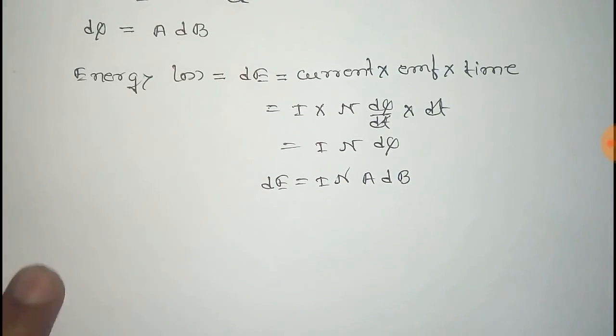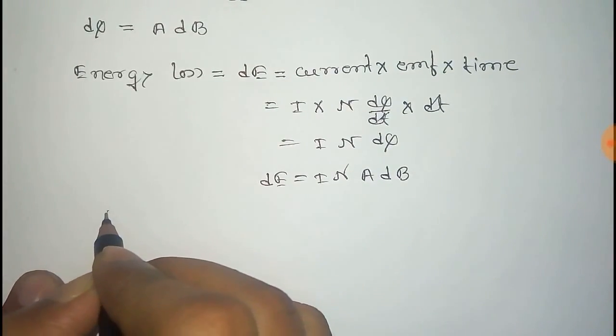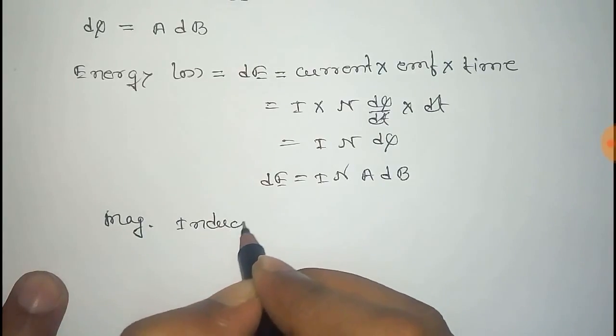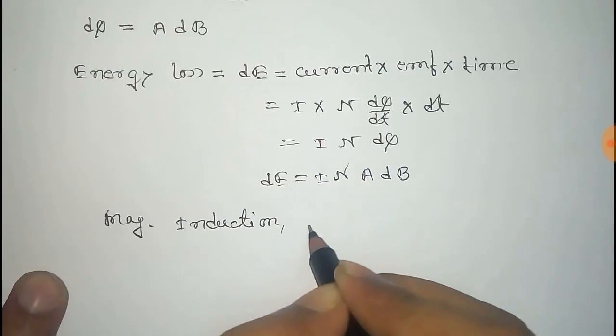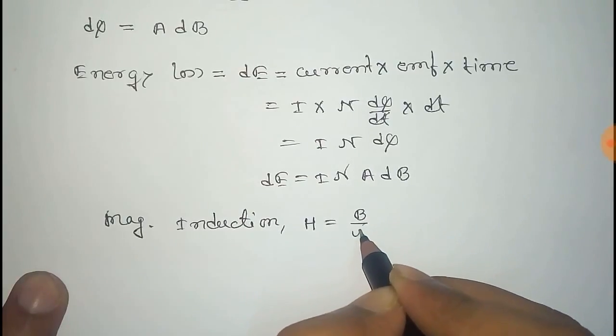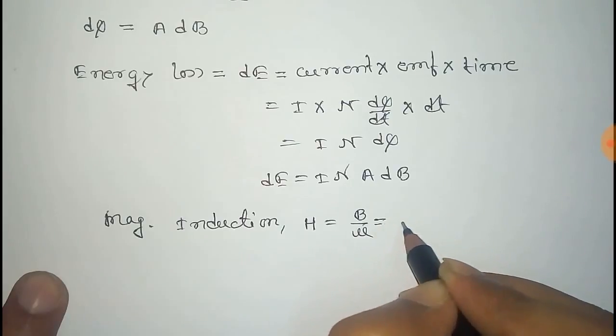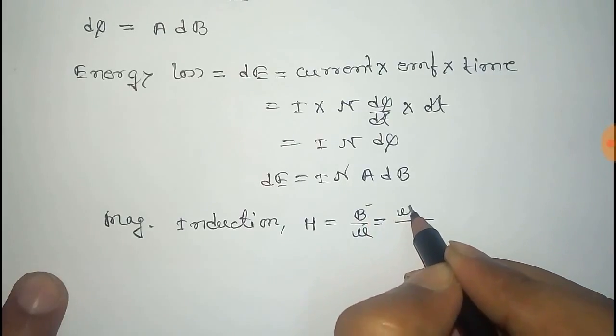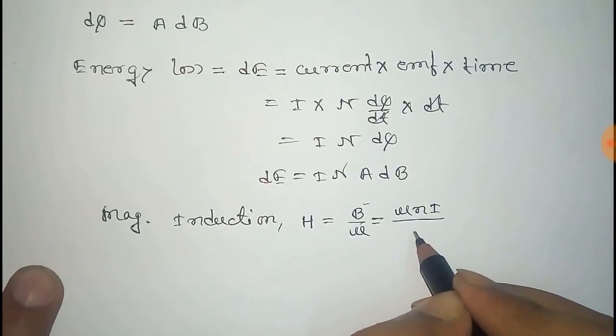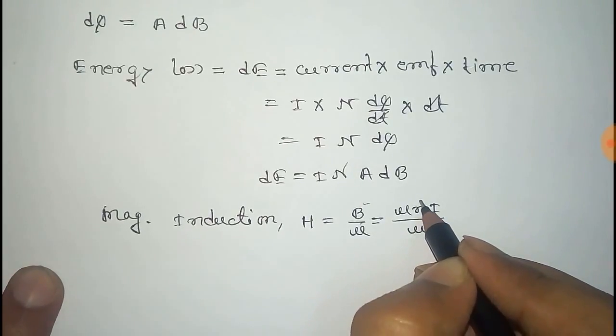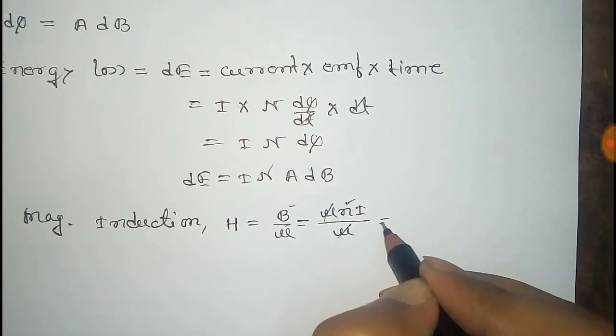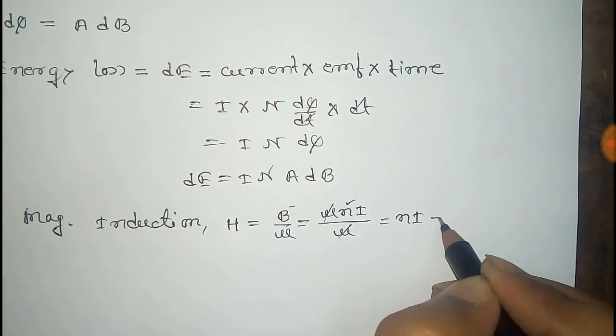Now the magnetic induction H is given by B by μ. And B is given by μ N I by μ. Here N is the number of turns per unit length. And so μ μ cancelled out and remaining is N I.